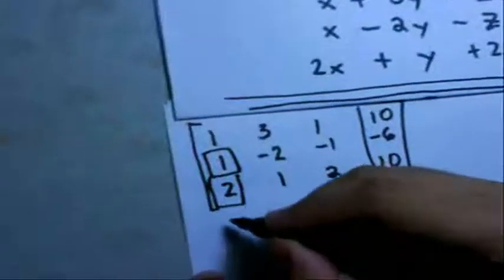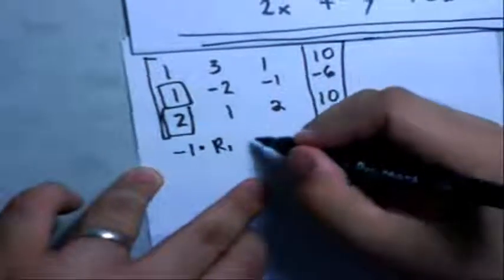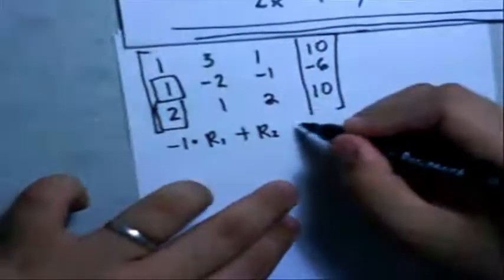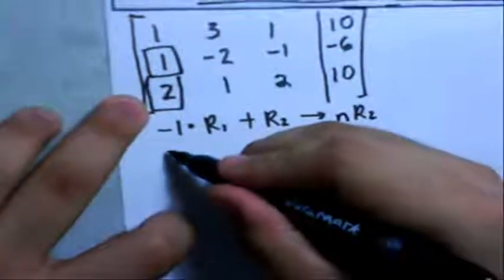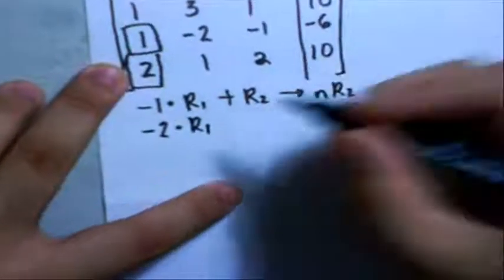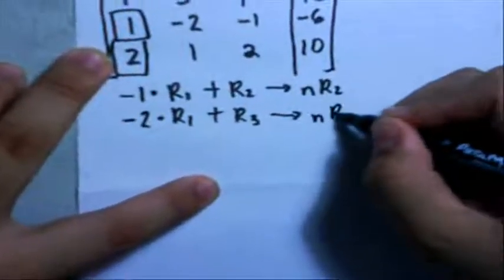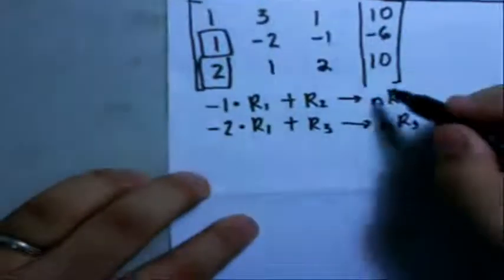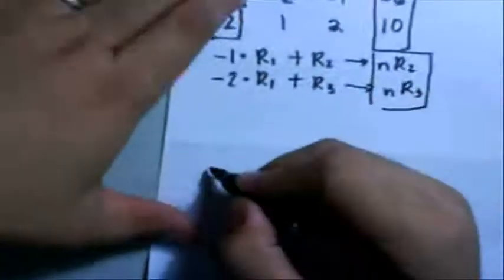We create a formula: negative 1 times Row 1 plus Row 2 gives us a new Row 2. We can also make the other entry zero by using: negative 2 times Row 1 plus Row 3, which gives us a new Row 3. So only Row 2 and Row 3 will change, and we will make a new matrix.